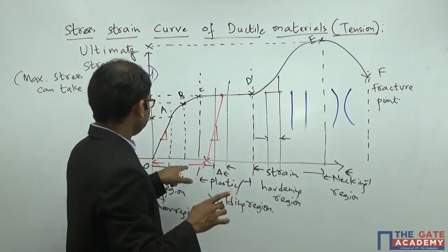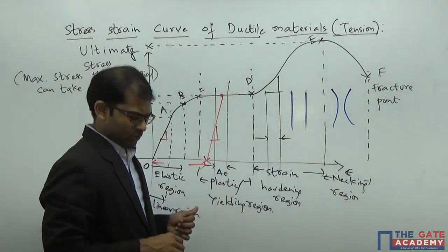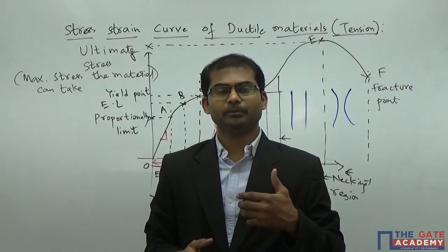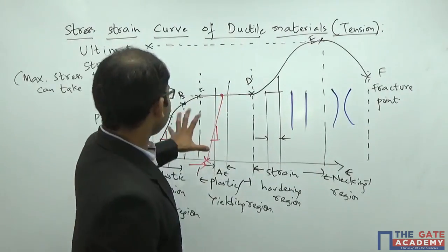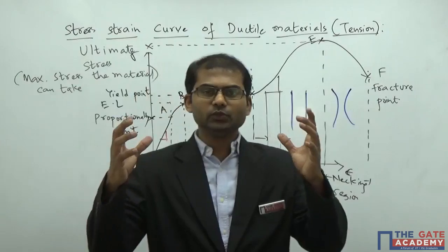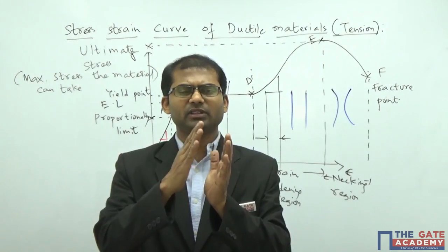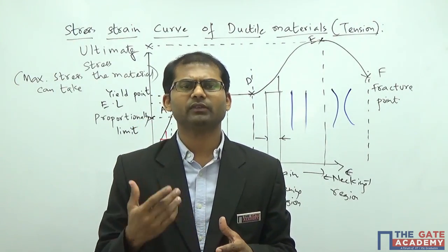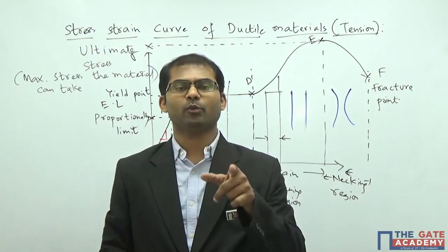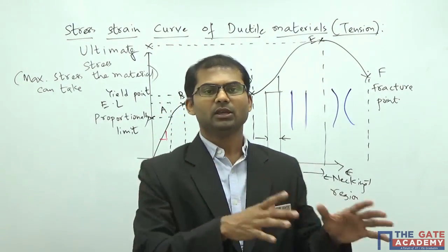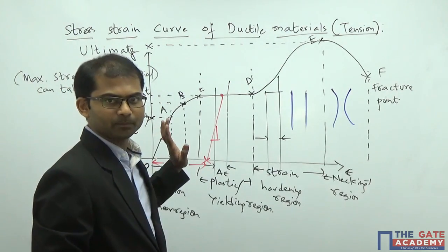After point E, the curve drops and the material fractures at point F — called the fracture point. In the region E to F (necking region), the area of cross-section decreases drastically. Practically, points A, B, and C are very close together and effectively coincide in real materials, so the difference between them is negligible. Also, B to C has no distinct named region since all three points nearly merge in practice.